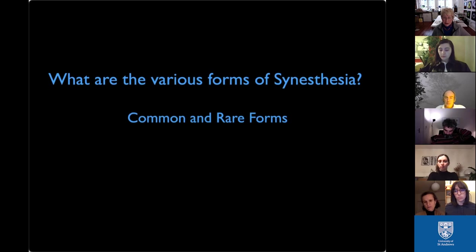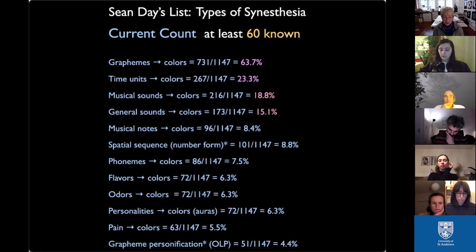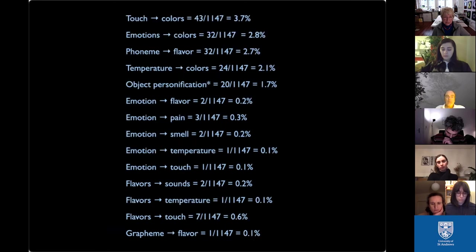What are the various forms of synesthesia? There are common forms and rare forms. About four forms many synesthetes share: letters and numbers in color, days of the week and months in color, musical sounds with color, and general sounds with color. There are also differences between pitch giving color and timbre giving color. There are a great many forms of synesthesia documented — even more than when Sean Day documented these perhaps ten years ago.